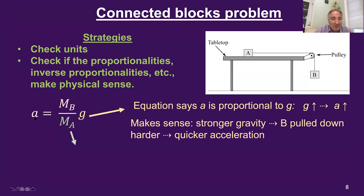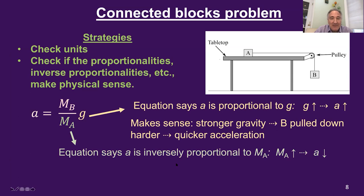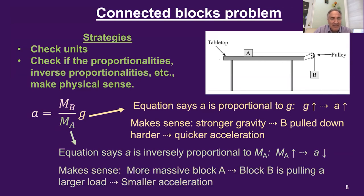Let's now check the inverse proportionality between the acceleration and the mass of block A. The equation says it's inversely proportional, so if you increase the mass of block A — increase the denominator — the acceleration goes down. Does that make sense? Yes, that's what we reasoned above: if block A is made more massive, then block B is pulling a larger load and therefore block B accelerates less quickly. So far, the proportionalities and inverse proportionalities in the equation all make sense.